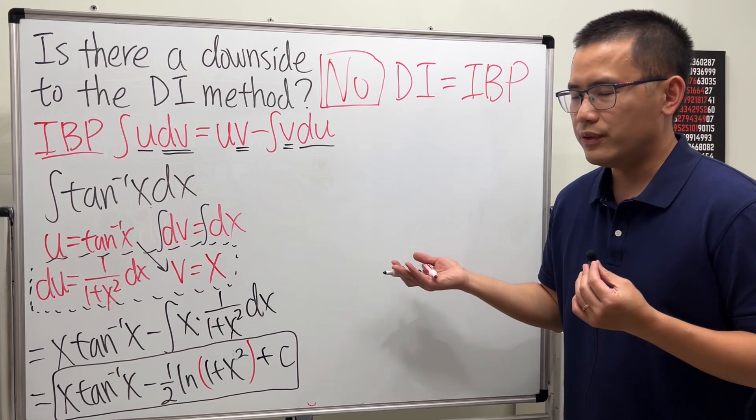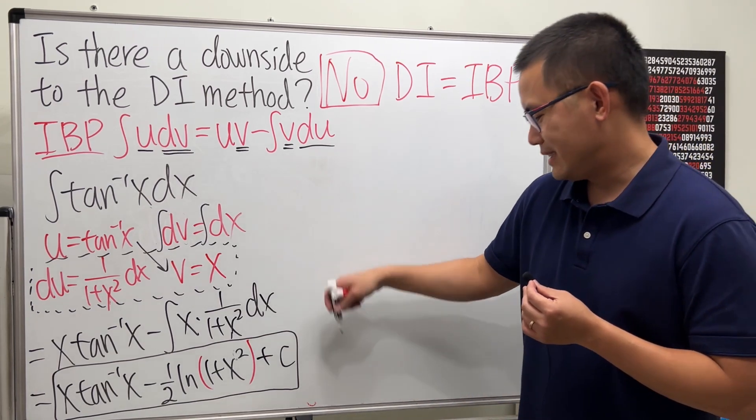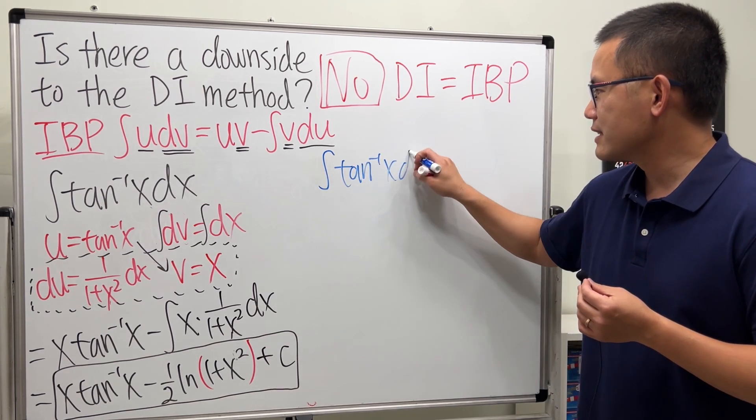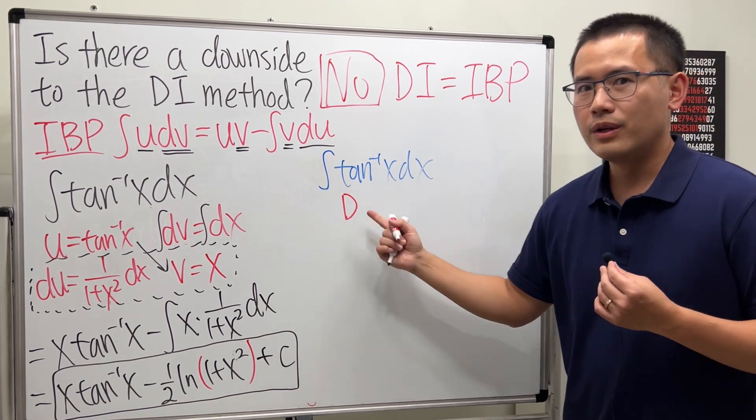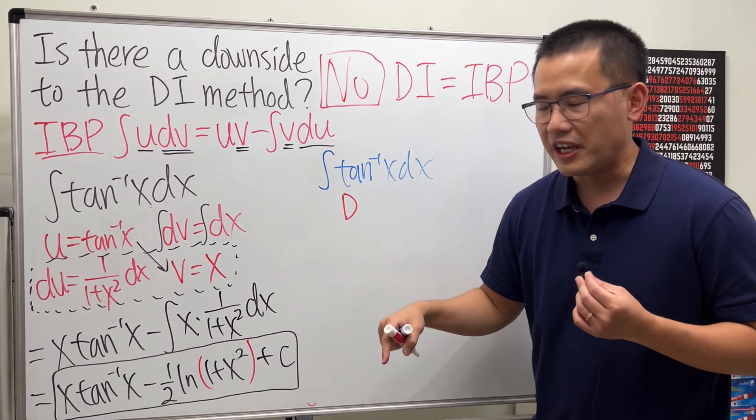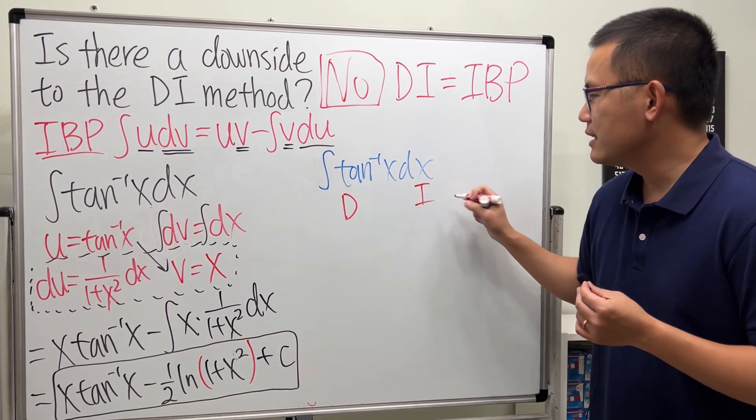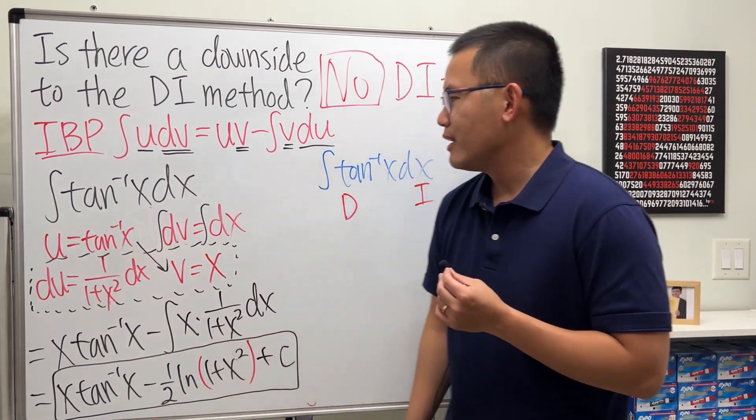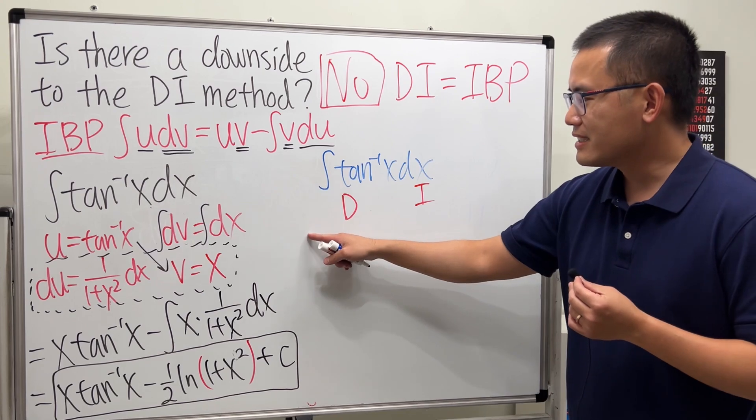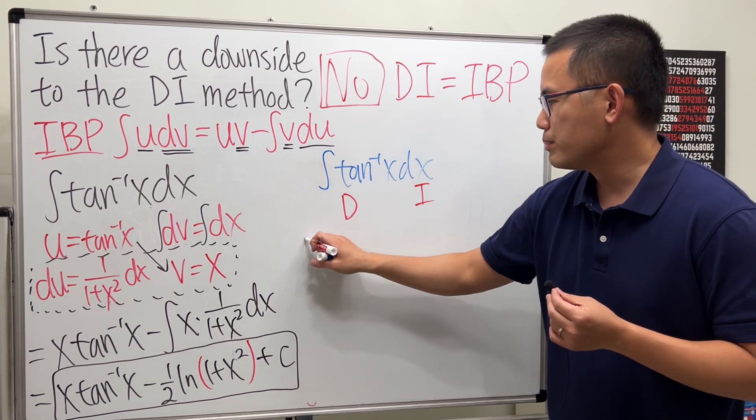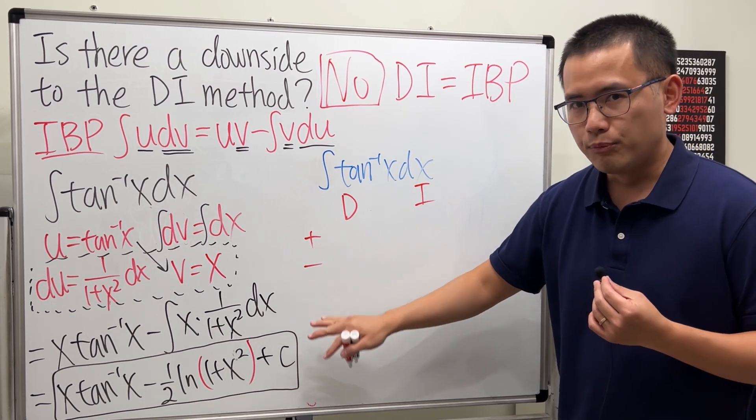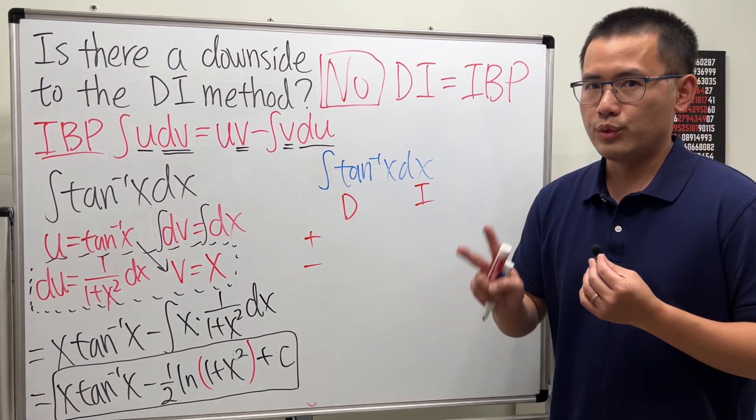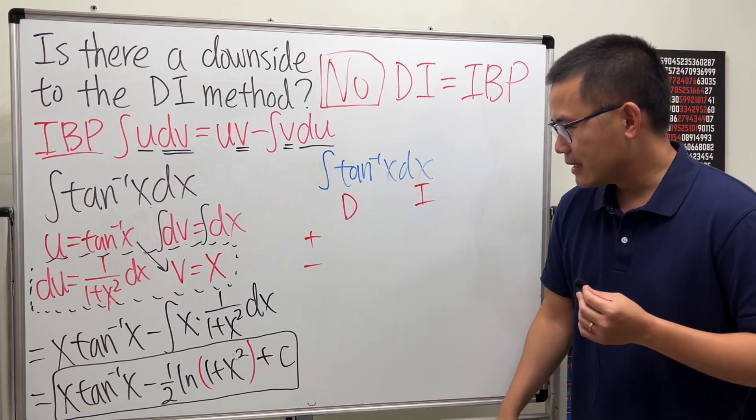Now, what would you do if you do DI? That's the integral of inverse tangent of X. What does D represent? Something to be differentiated. What does I represent? Something to be integrated. Isn't that what we said earlier? Here. Yes. And now, on the side to get ready, let's put down plus, minus. Sometimes you will have more. So, make sure you check out my other video for different stops. This is the case when we have the second stop.